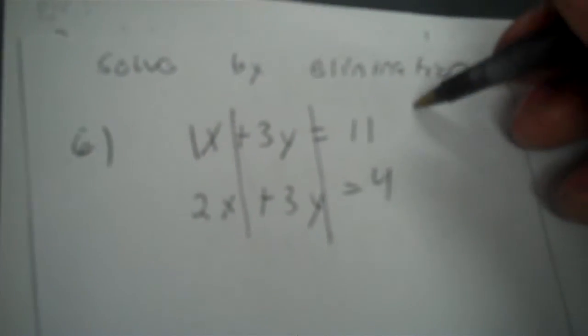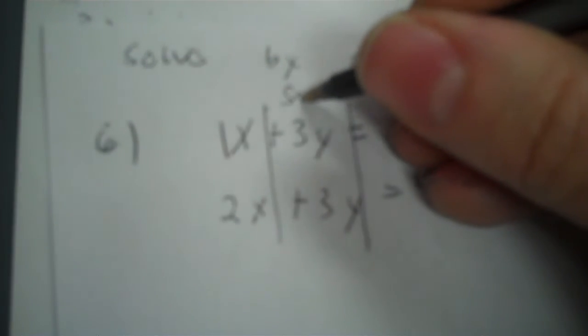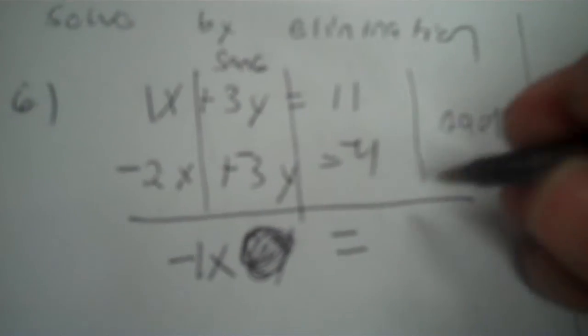Solving by elimination — there's not going to be a base. Elimination is where you align it into columns. Either the x column or the y column has to add to 0. We have a column with the same term; if we make one of them negative, they add to 0. So negative 2x and the 4 become negative, eliminating y. 1 plus negative 2 is negative 1x, and 11 plus negative 4 is 7. Divide and x equals negative 7.